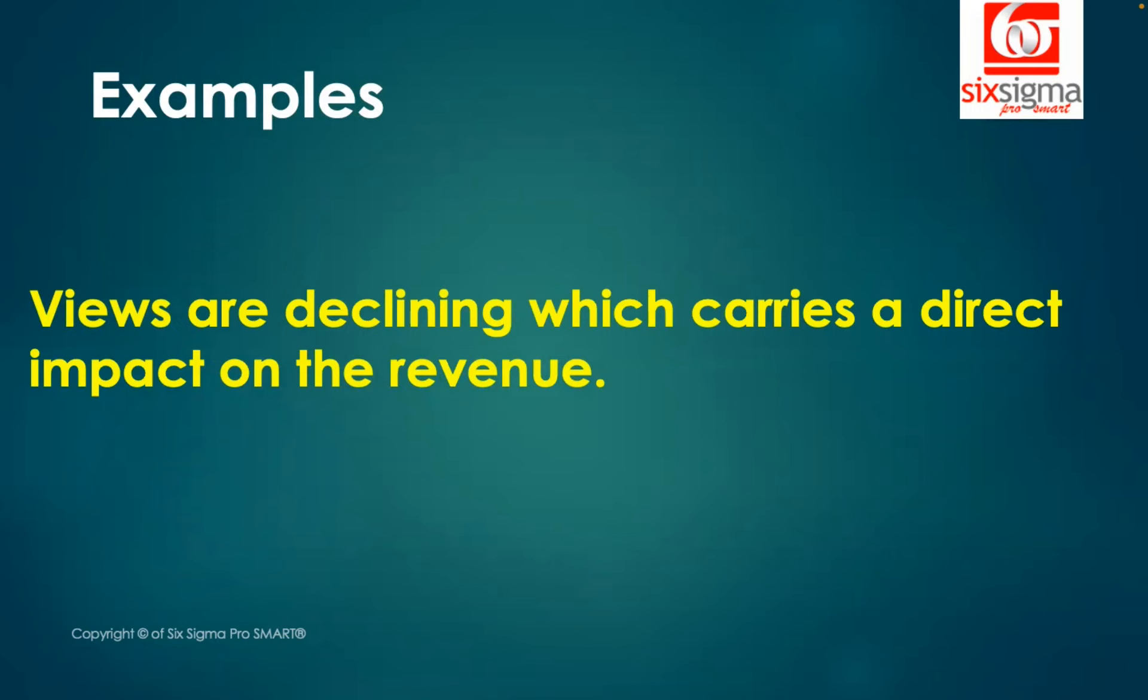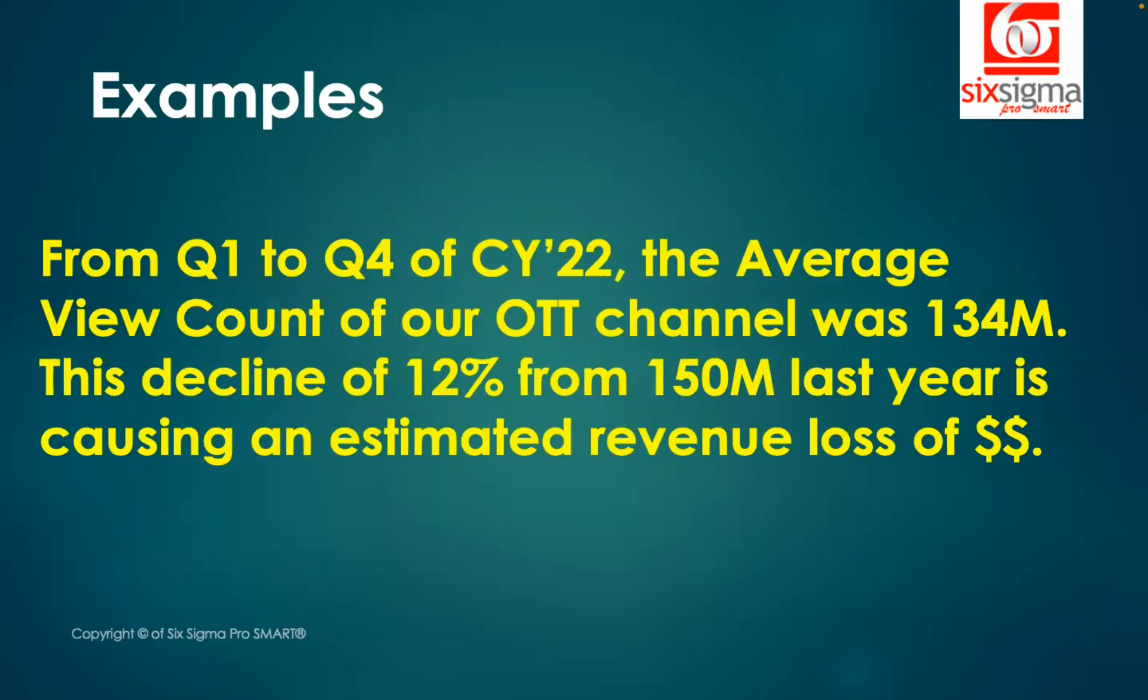But what we fail to do in these two examples is the quantification. Can we say from Q1 to Q4 of calendar year 2022, the average view count of our OTT channel was 134 million? This decline of 12% from 150 million last year is causing an estimated revenue loss of a certain amount, which can be easily obtained looking at the numbers.